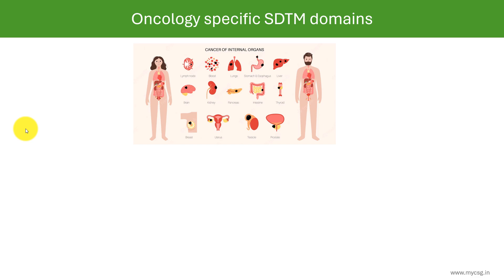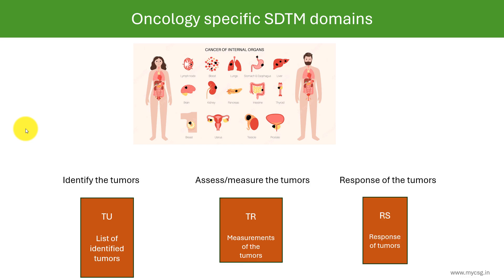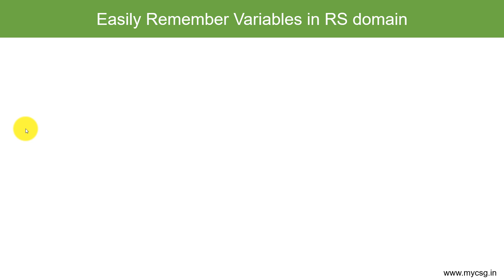In an oncology clinical trial, you first identify the tumors present in the patient's body, then assess or measure those tumors, and then determine the response of those tumors to the study treatment. The list of identified tumors is stored in the TU domain. Measurements taken during screening, treatment, and follow-up periods are stored in the TR domain. The response of those tumors is stored in the RS domain.